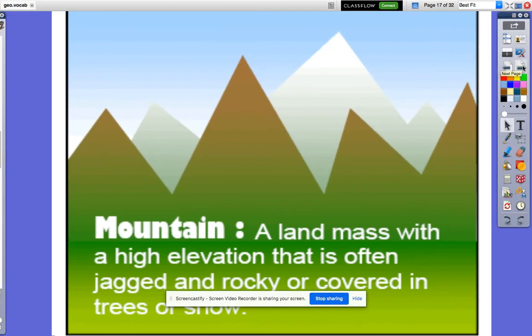A mountain. A mountain is a landmass with a high elevation that is often jagged and rocky, or covered in trees or snow.